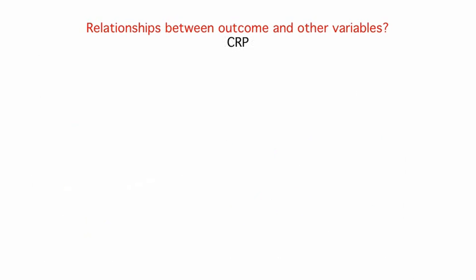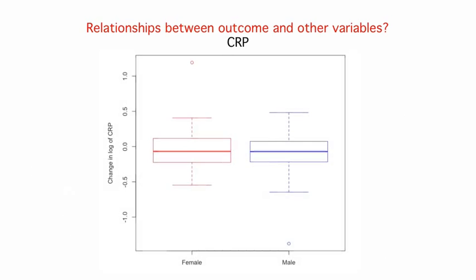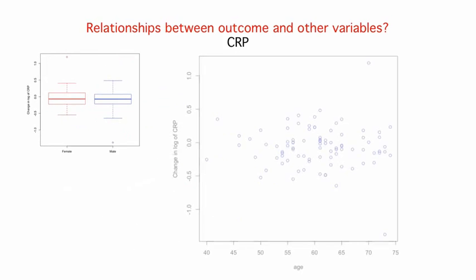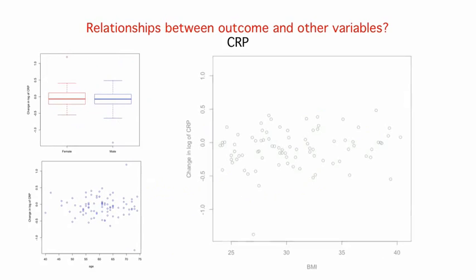And for our other outcome variable, the change in the log of CRP, other than the outliers, the values are very similar for females and males, and there doesn't appear to be a relationship with age, nor with BMI.